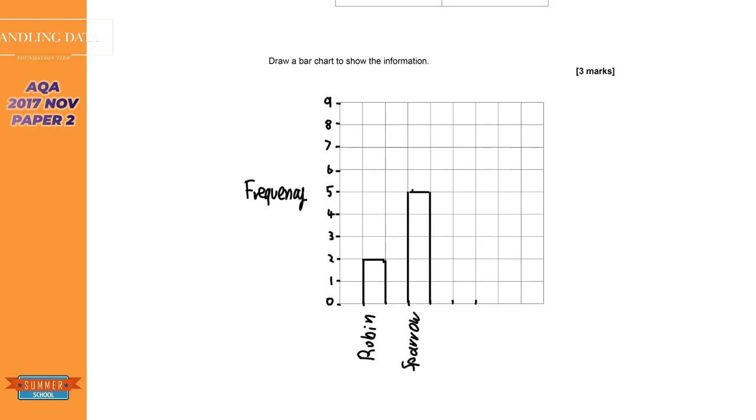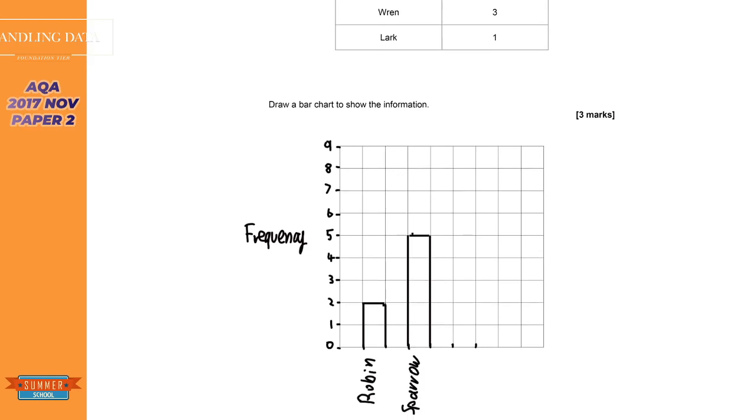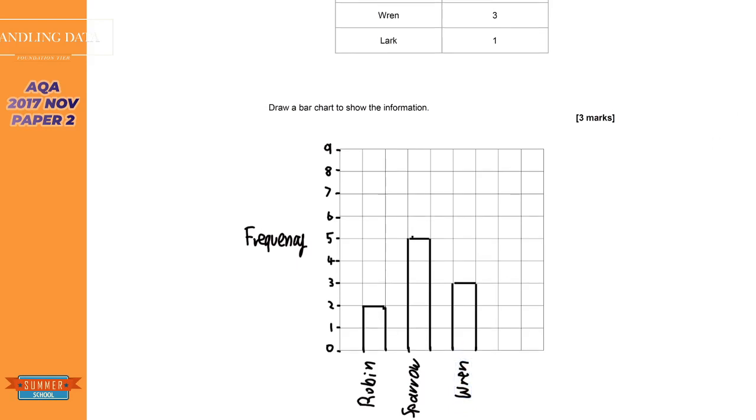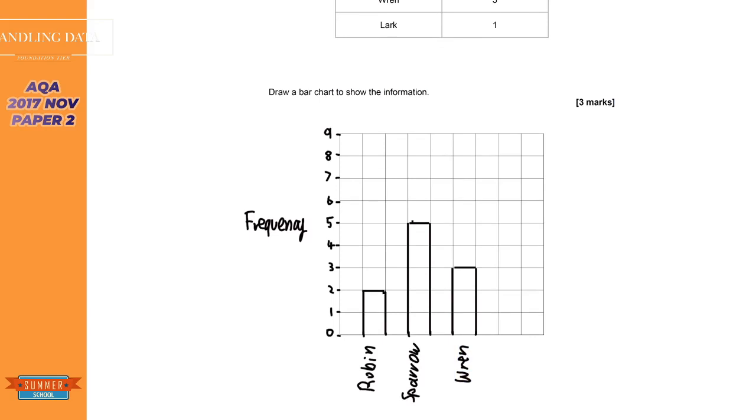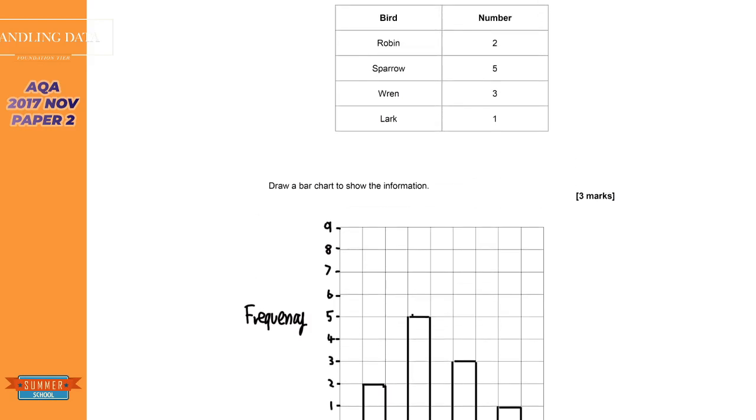Let's mark the next one out. And it's 3. There we go. And it's Wren. And there we go. Next one will be a Lark at 1. Just mark that out. So that will be there. And that will go up to 1. So we've got those labelled.